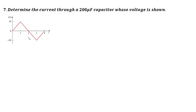For each interval, we have a straight line describing a particular function. From 0 to 1, from 1 to 3, and from 3 to 4, we have straight lines forming pieces of functions that come together to form a bigger function. We will consider each of the three intervals to find the voltage across the 200 microfarad capacitor, then use the current-voltage relationship equation to find the current.